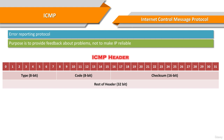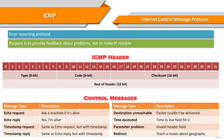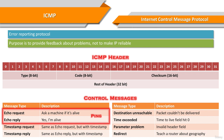ICMP type and code in the header identifies the control message. Some of the ICMP control messages are shown in this slide. Ping is the most well-known application of ICMP. It operates by sending ICMP echo request packets to the target host and then waiting for an ICMP echo reply.